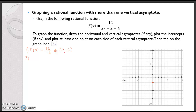The second step is to find the x-intercepts, so that's when y equals 0. Because when we multiply both sides by the denominator we can say 0 equals the numerator — that is not true — so we're going to have no x-intercepts.